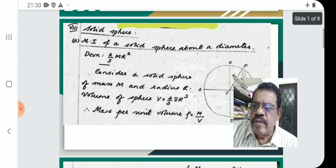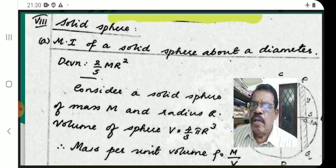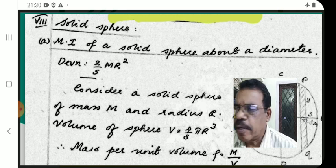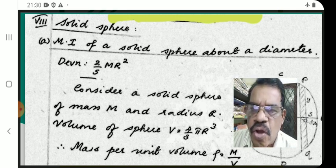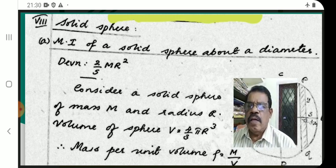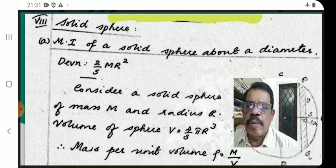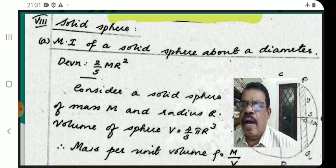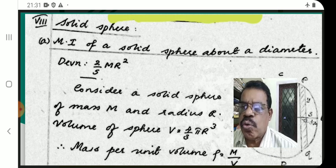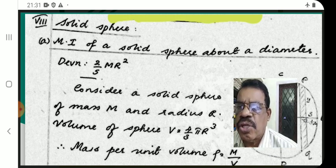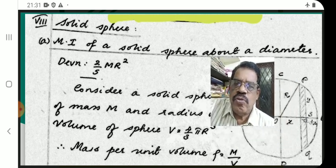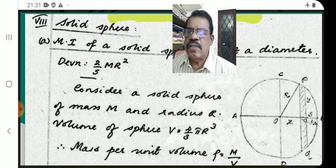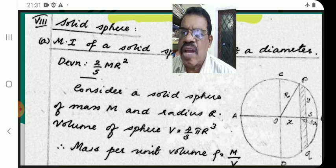Now we can see the next derivation, which is the Moment of Inertia of a Solid Sphere. MI of a Solid Sphere about a diameter — the formula is given by I = 2/5 mR². The derivation of I = 2/5 mR²: MI of a Solid Sphere about a diameter is I = 2/5 mR².